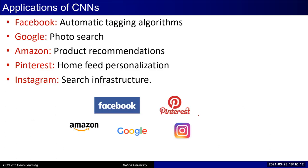Today, many visual applications you interact with are using CNNs or a combination of CNN with something else to solve different visual problems — like automatic tagging of photos, or image search where you give an image as a query and want all similar images retrieved. All such applications involving images are using some version of CNN.